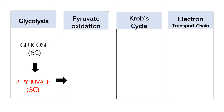Cellular respiration starts with glycolysis. Glycolysis occurs in the cytoplasm of the cell, where glucose is split into pyruvate. Glucose is a 6-carbon molecule that becomes pyruvate, a 3-carbon molecule. The goal of this biochemical process is to produce pyruvate.